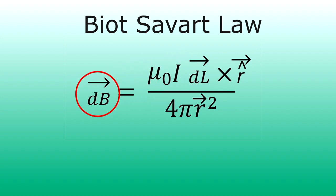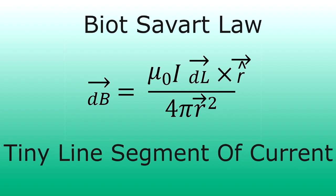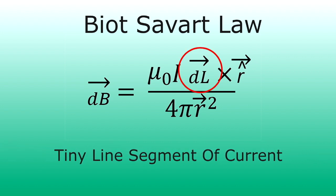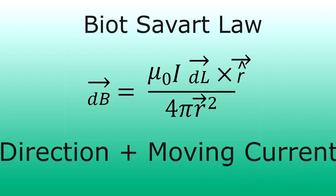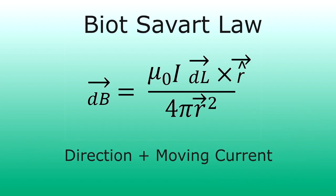Now this is one nasty little formula, because unlike Coulomb's law, where the cause of the electric field is a simple point charge, the cause of a magnetic field is a tiny line segment of current. So we have both a direction and a moving current, making it much more complicated.